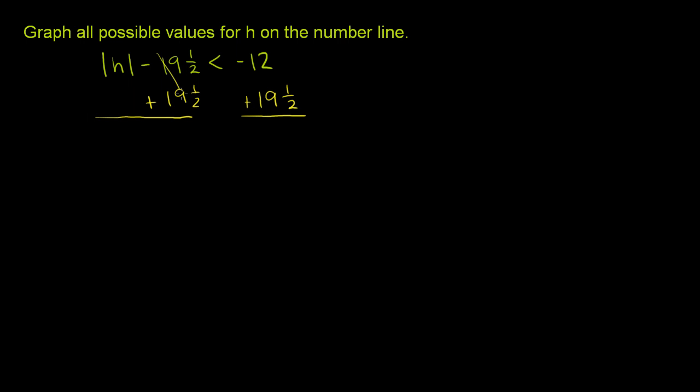On the left hand side, these guys obviously cancel out. That was the whole point. And we are left with the absolute value of h on the left hand side is less than - and then if we have 19 and a half essentially minus 12, 19 minus 12 is 7, so it's going to be 7 and a half.